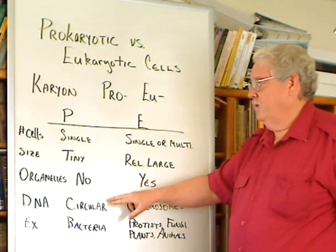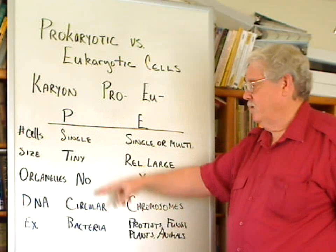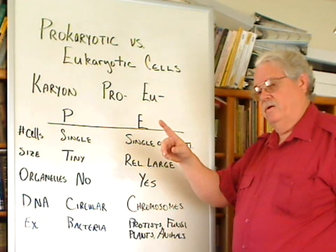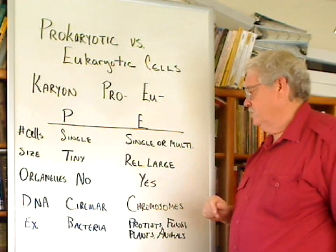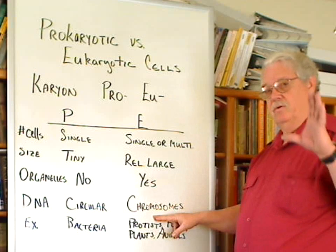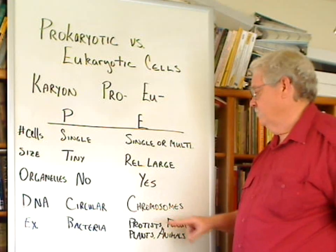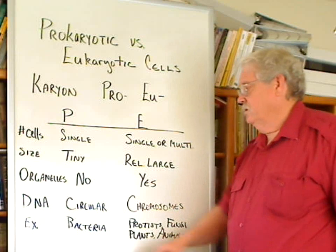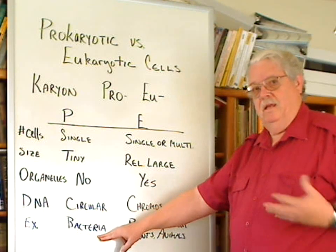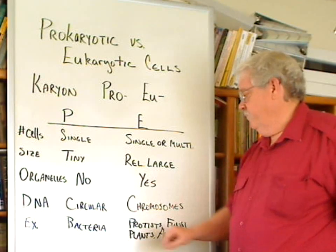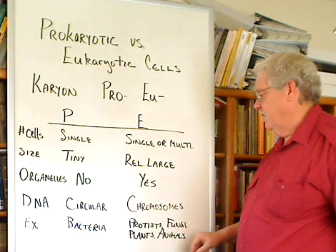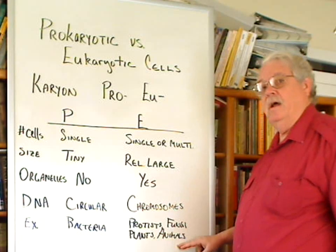Relative to DNA, the bacteria — the prokaryotic cells — have a circular DNA strand that's continuous, whereas eukaryotic cells have the DNA arranged in separate chunks or pieces that are called chromosomes. Examples of prokaryotic include bacteria and the archaea, or extremophiles. And with eukaryotic: the protists, the fungi, the plants, and the animals.